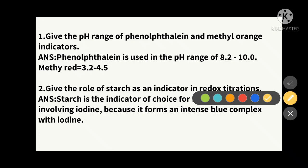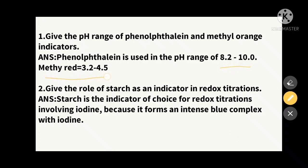First question: give the pH range of phenolphthalein and methyl orange indicators. Phenolphthalein has a pH range of 8.2 to 10, and methyl orange has a pH range of 3.2 to 4.5.